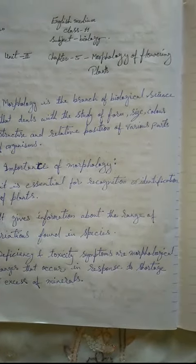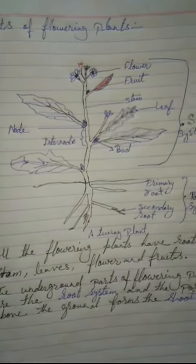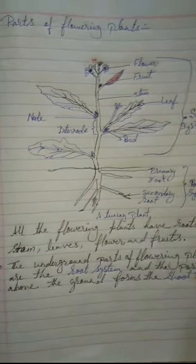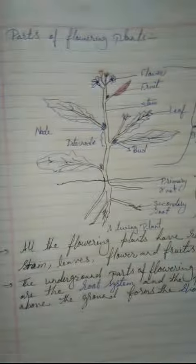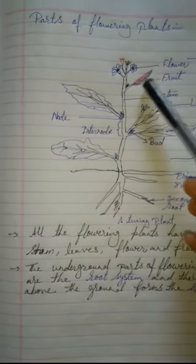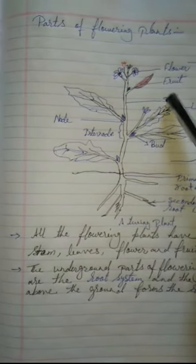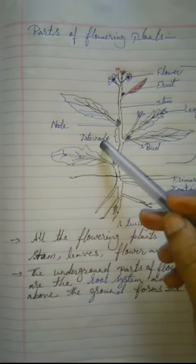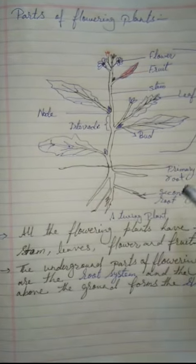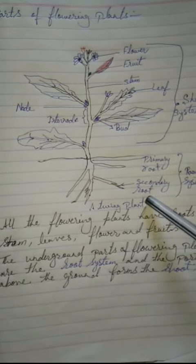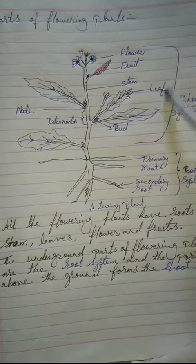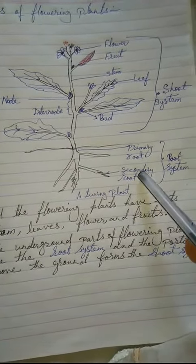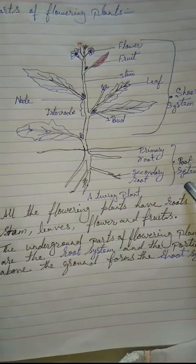Parts of Flowering Plants: flowers, fruits, stem, leaf, buds, internode, node, primary root, secondary root. This portion is called the shoot system, and this portion is called the root system.